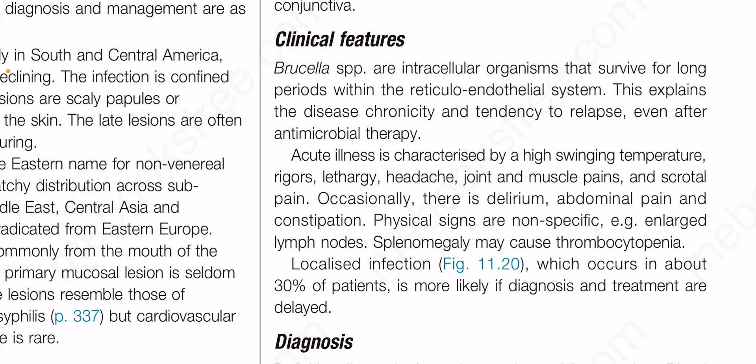Occasionally there is delirium, abdominal pain, and constipation. Physical signs are non-specific — for example, enlarged lymph nodes, splenomegaly, hepatomegaly, and thrombocytopenia. Localized infection, which occurs in about 30 percent of patients, is more likely if diagnosis and treatment are delayed.